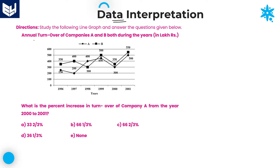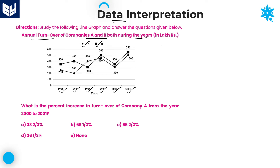Here, the information provided in this line graph data interpretation is the annual turnover of companies A and B during the years. Annual turnover of two companies is given in various years starting from 1996 to 2001. All the values provided in this line graph are given in terms of lakhs.